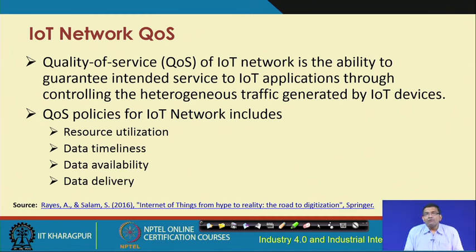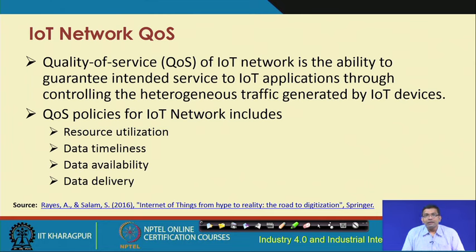Quality of service of an IoT network talks about guarantees with respect to offering different services to IoT applications through controlling the heterogeneous traffic generated by IoT devices. QoS policies for IoT networks include resource utilization, data timeliness, data availability, and data delivery. These are the four different attributes of prime consideration in the context of QoS for IoT networks.